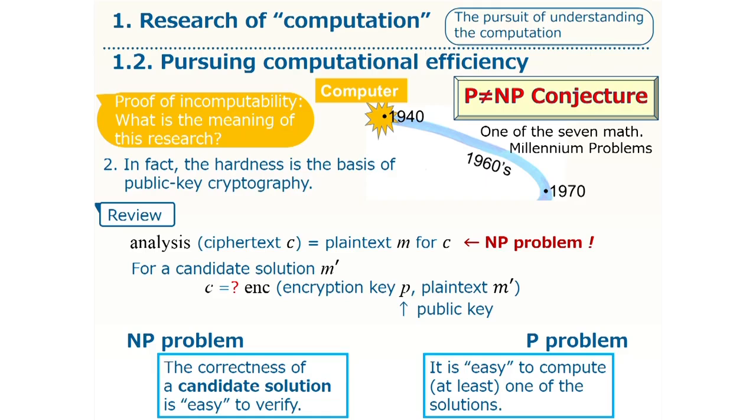Thus, the computational task of cryptanalysis is indeed an NP problem. So the hardness of this NP problem is important. Do you remember, when we discussed the security of cryptography, I explained that the security is guaranteed computationally. This is in fact the computational hardness of this NP problem. So in this case, we really want that the problem is not solvable even partially.